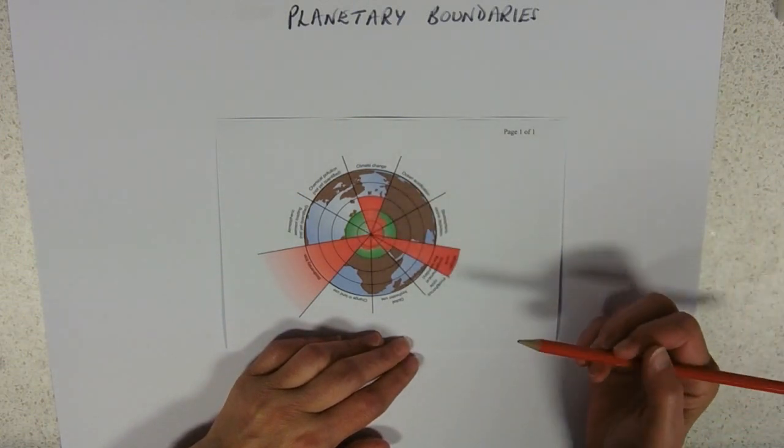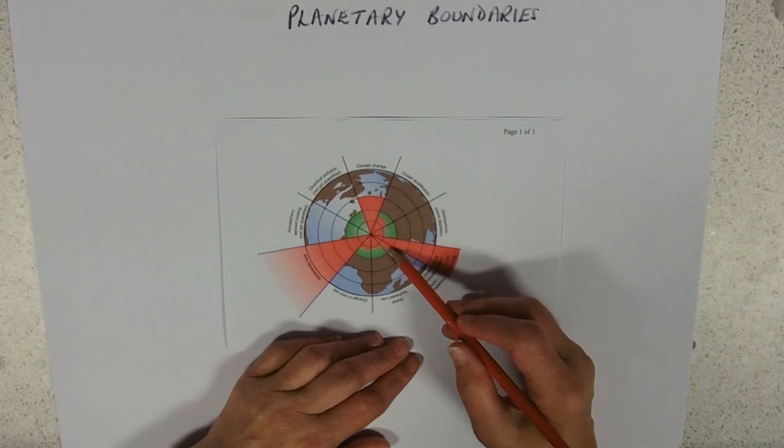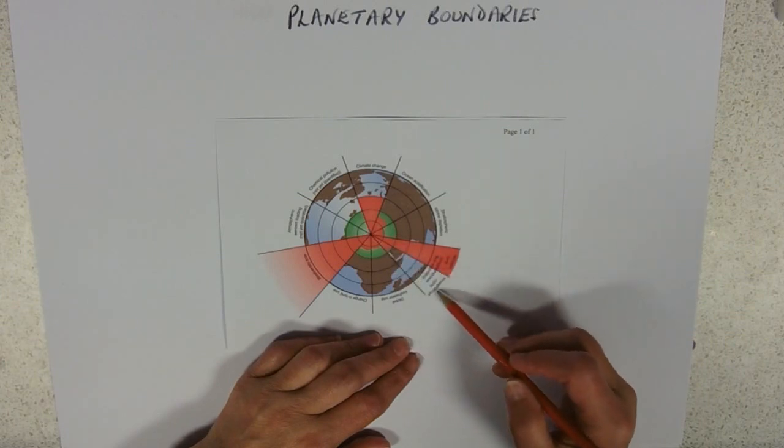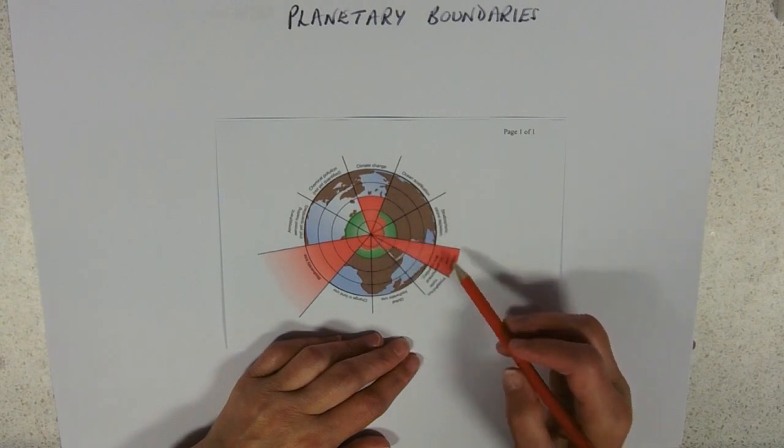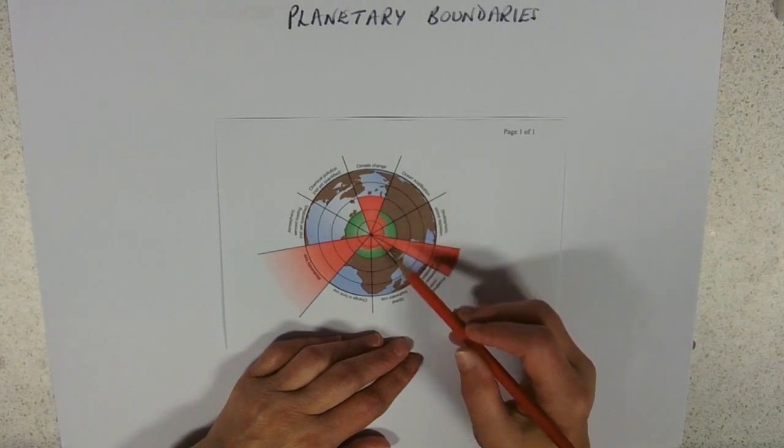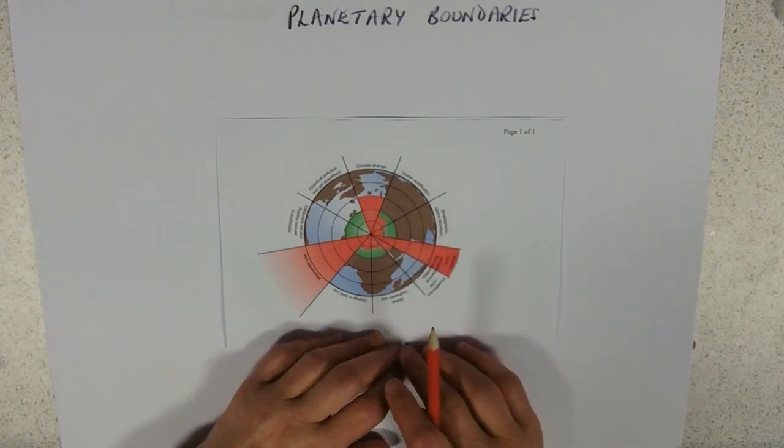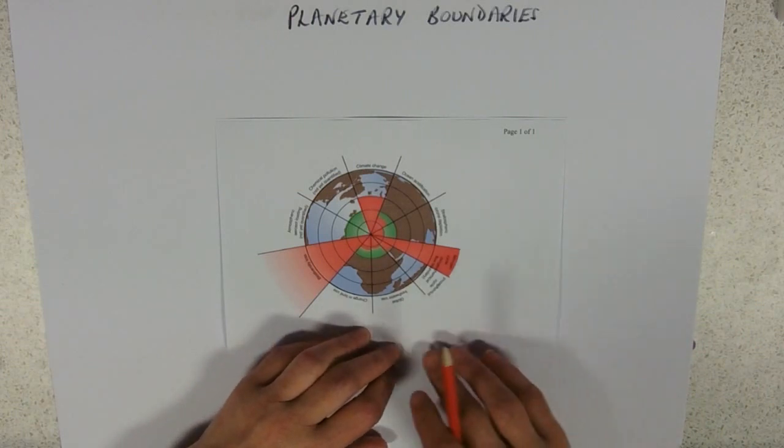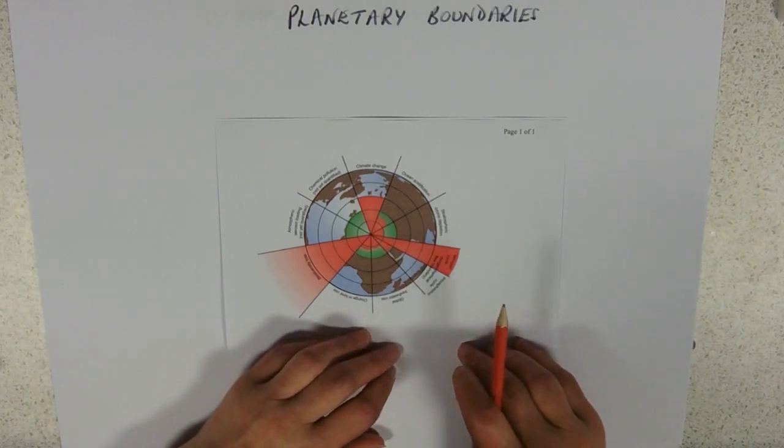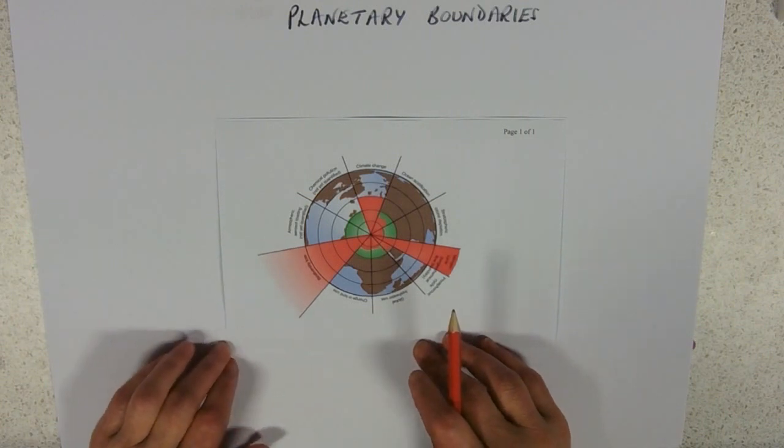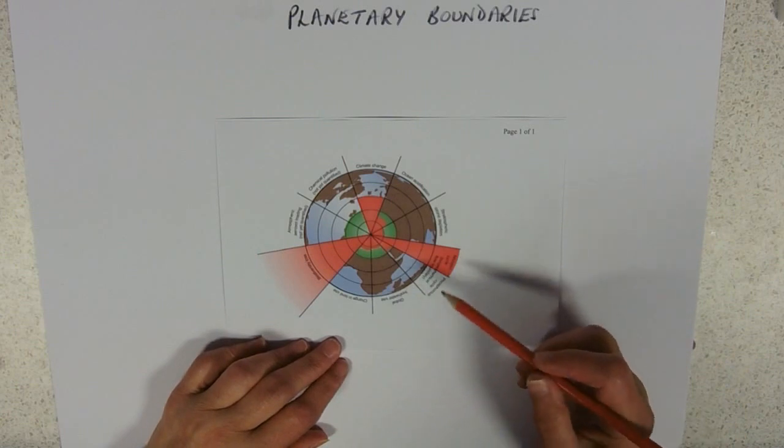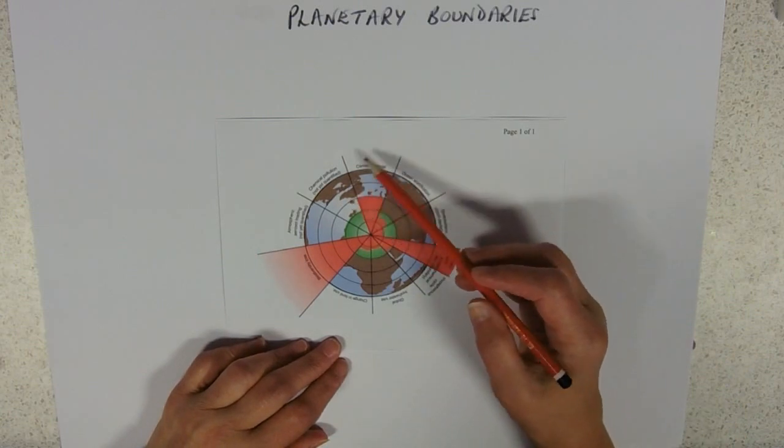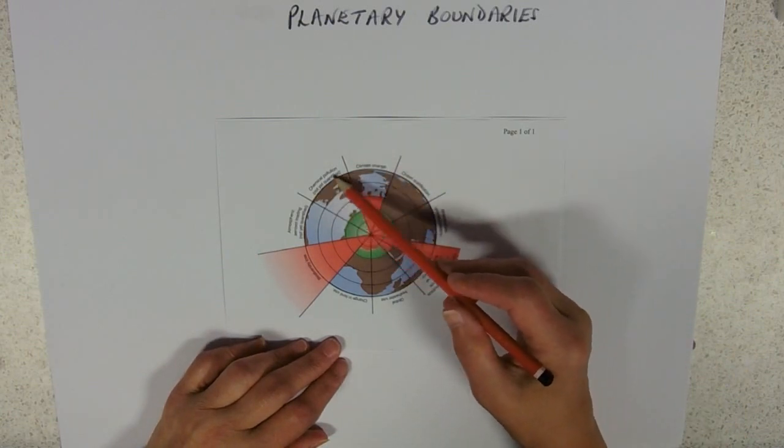We're outside of the safe zone. And you can see we're creeping really close with all our nutrients. So this is the nitrogen bar crossed, phosphorus getting there. And if you look it up on the internet, you'll see that there are other ones that we are very close to crossing. And some that have not yet been quantified, like chemical pollution.